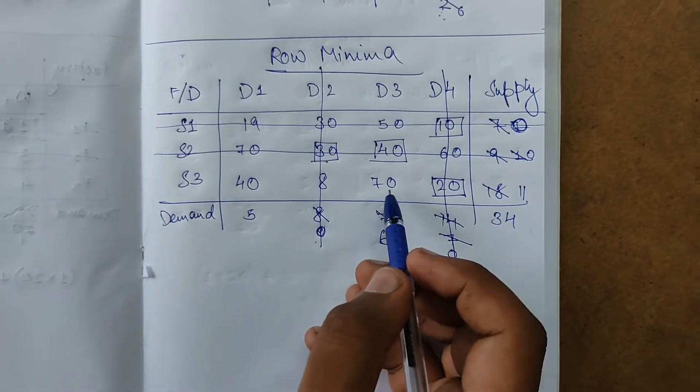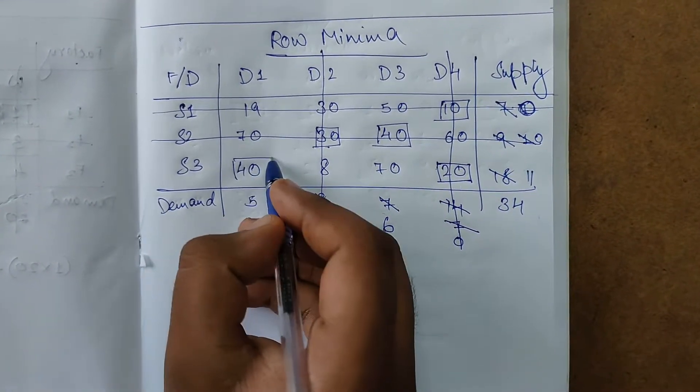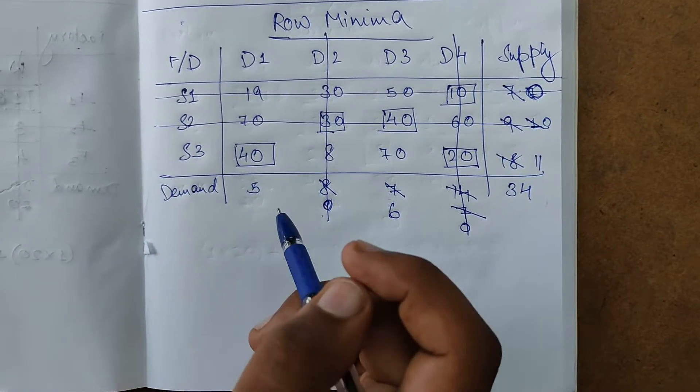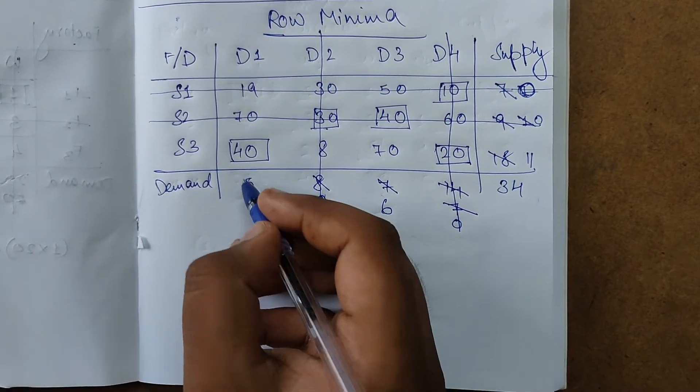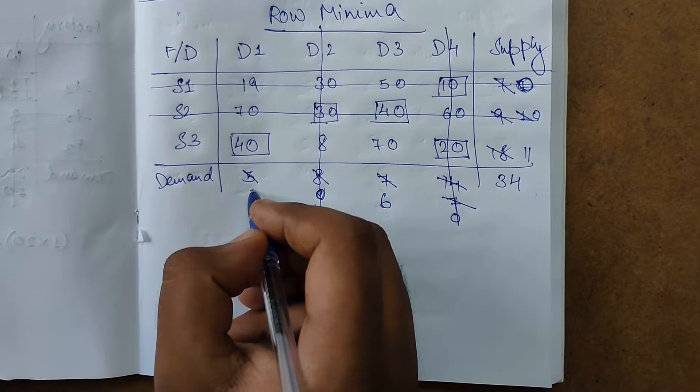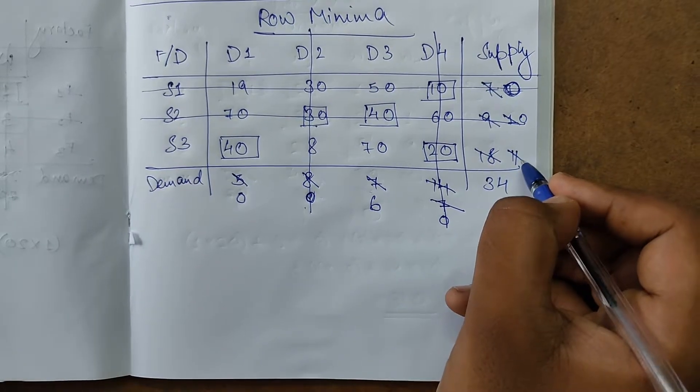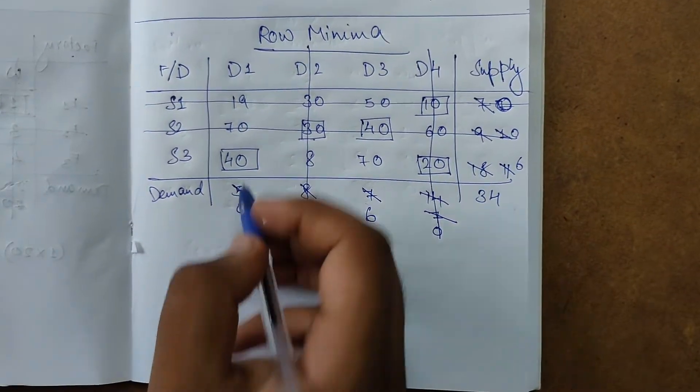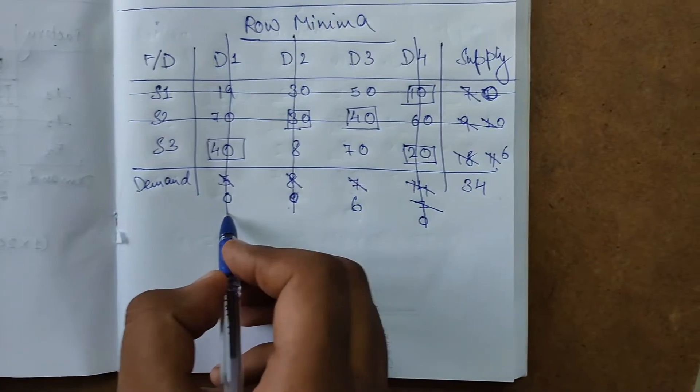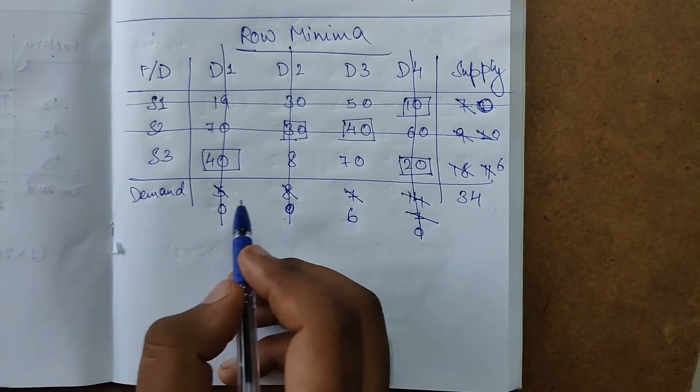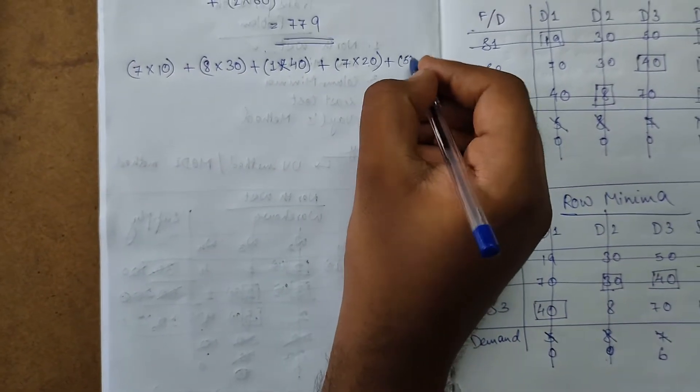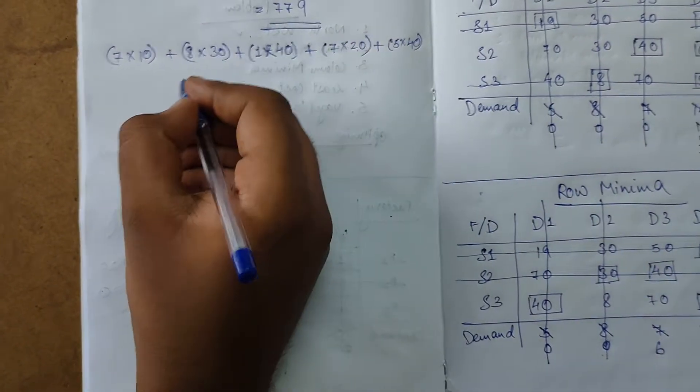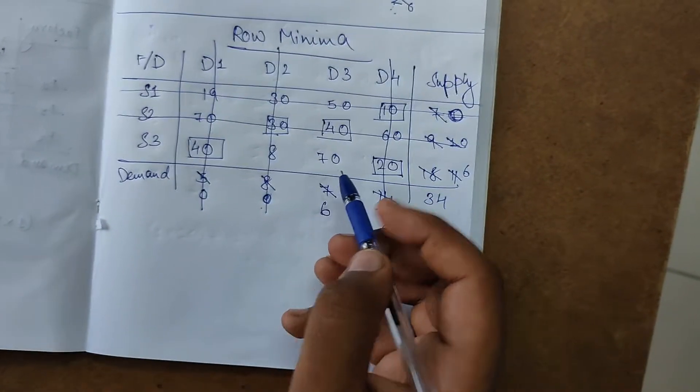Balance are 40 and 70, so 40 is the smallest. Highlight 40. Demand is 5, supply is 11, so subtract 5. 5 minus 5 is 0, 11 minus 5 is 6. Allocation on this side, cross this row. Subtracted 5, so add 5 into 40 to the solution, plus.